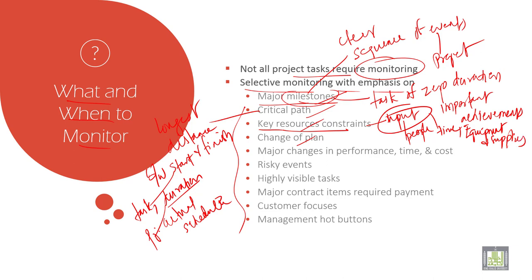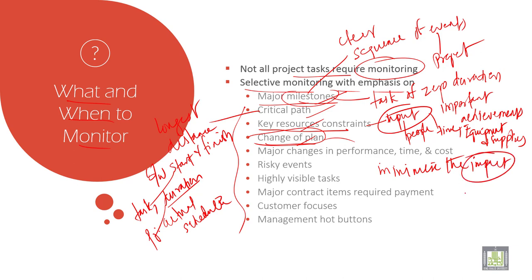Then change of plan. A change of plan is done to minimize the impact. This is seen in business where employees, customers, and stakeholders have a sudden change in plan which should be compensated. The change can come from business, employees, or customers. Major changes in performance, time, and costs are all taken into consideration.